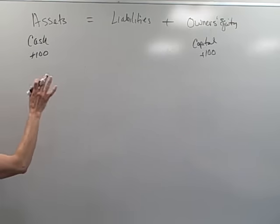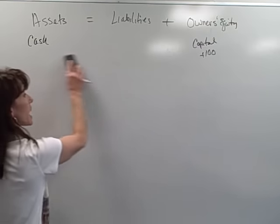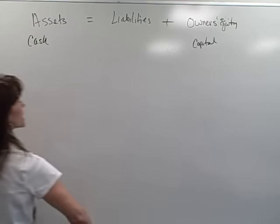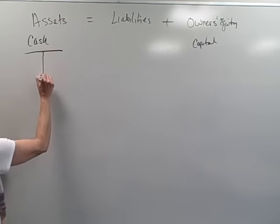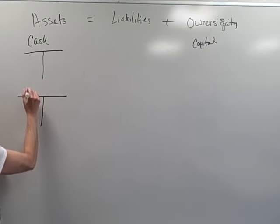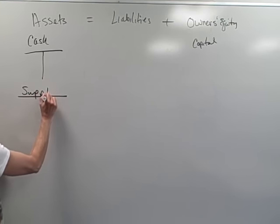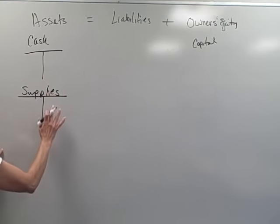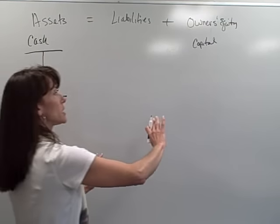Our second chapter then said, well, let's not use the accounting equation anymore. Let's go ahead and use T accounts. And so what we were doing is we were drawing a T account under each of our asset accounts. For example, our cash account had a T account and our supplies account had a T account.